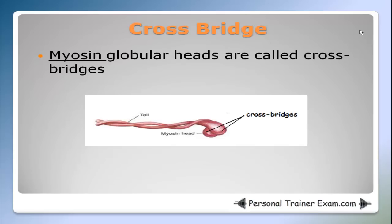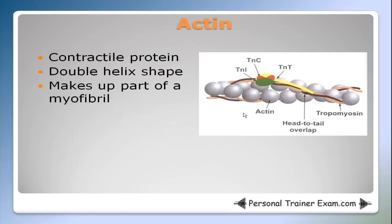As you can see in this picture, these myosin heads are called cross bridges. Actin. Actin is a contractile protein. It has a double helix shape and makes up part of a myofibril.